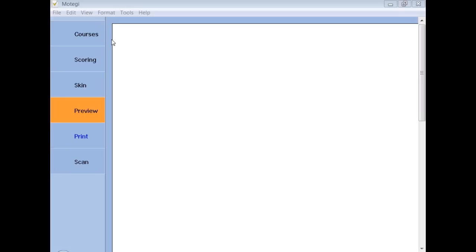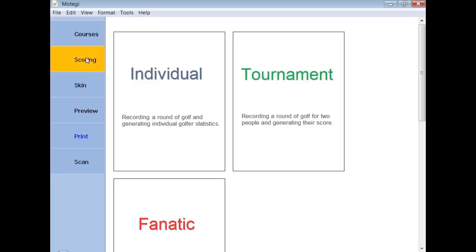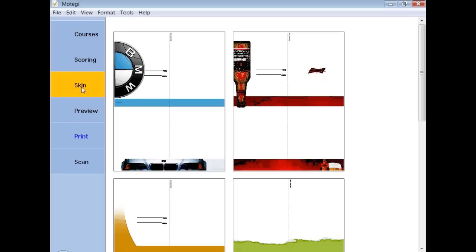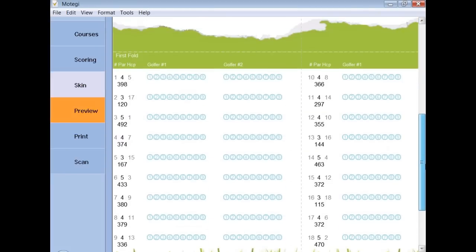So an end user, after the SI has created this application and created the markable documents, the end user would come in or the golfer would come and select their course. They'd select their scoring model. In this case, we'll select a tournament. And then we come in and we can select a skin. We'll select this green one here. And then we preview it.